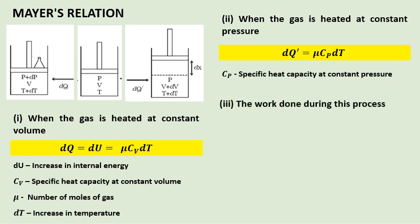The third part is the work done during this process. dW equals F dx. F is replaced by pressure into area, and A dx is replaced by dV.